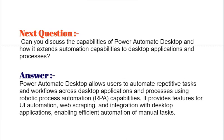Next question: Can you discuss the capabilities of Power Automate Desktop and how it extends automation capabilities to desktop applications and processes? Power Automate Desktop allows users to automate repetitive tasks and workflows across desktop applications and processes using robotic process automation (RPA) capabilities. It provides features for UI automation, web scraping, and integration with desktop applications, enabling efficient automation of manual tasks.